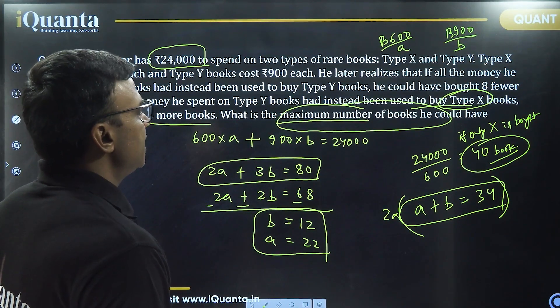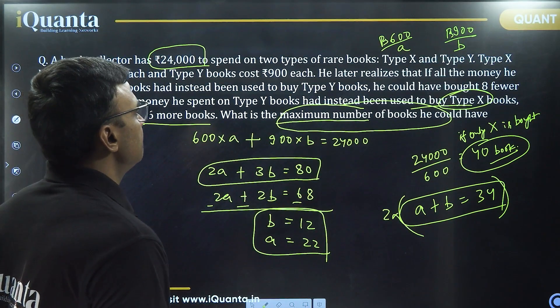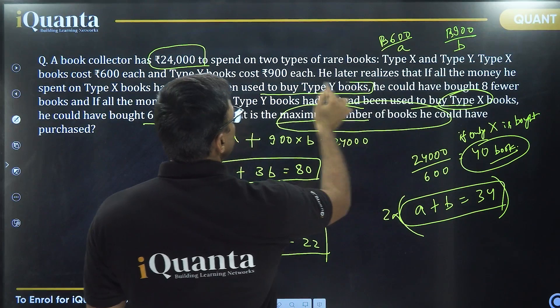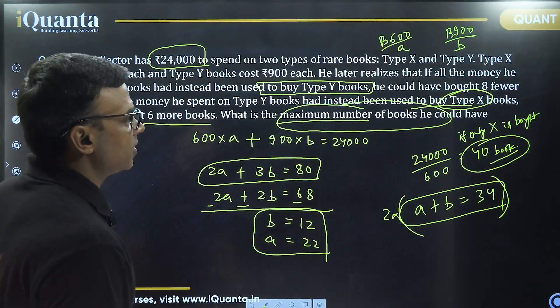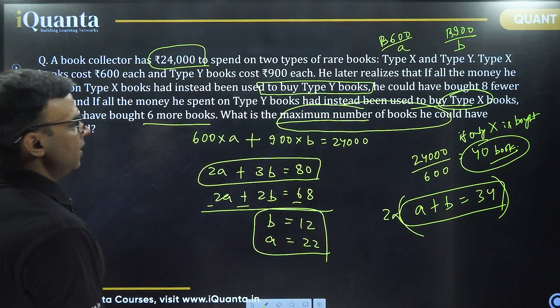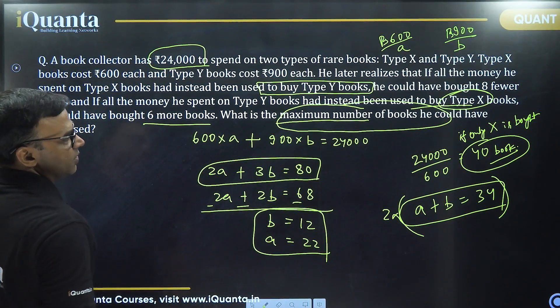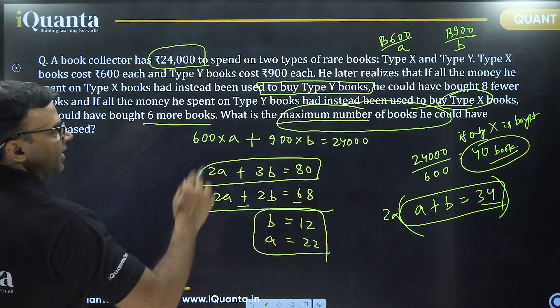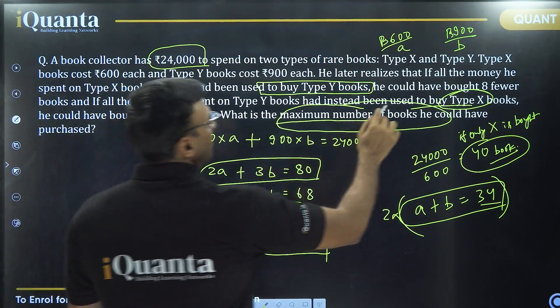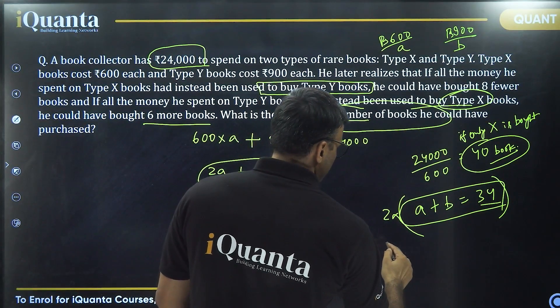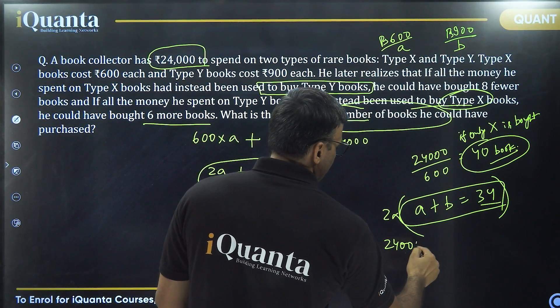Does that match? Let's see. How do we check whether it matches or not? We need to check this condition. If he is buying only type Y books, so we may not need this also, because we could have checked from here itself. If he buys only type Y books, he would get number of books as 24,000 divided by 900.